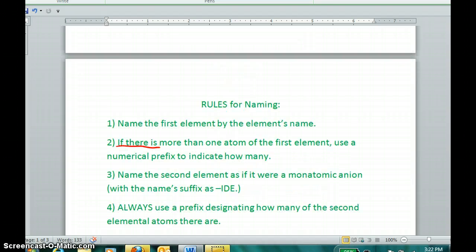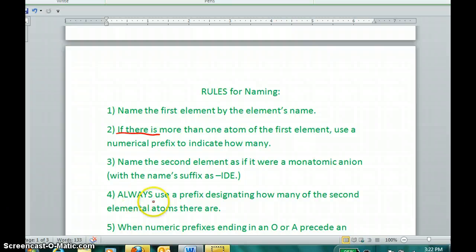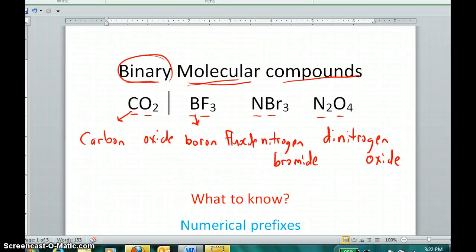Now, rule four and rule five will go together here. Rule five says, always use a prefix designating how many of the second element atoms there are. Now, by always using a prefix, that means if there were only one, I would use the prefix mono. But all these have more than one, so I'll use their various prefixes. So if there are two oxygens, I wouldn't just call this carbon oxide. I'd call this carbon dioxide. Now, because there are three fluorines, I wouldn't just call this boron fluoride. I'd call this boron trifluoride. And because we have three bromines in this case, this wouldn't just be nitrogen bromide. It would be nitrogen tribromide. And lastly, two nitrogens and four oxygens is dinitrogen. And the prefix for four of something is tetra.